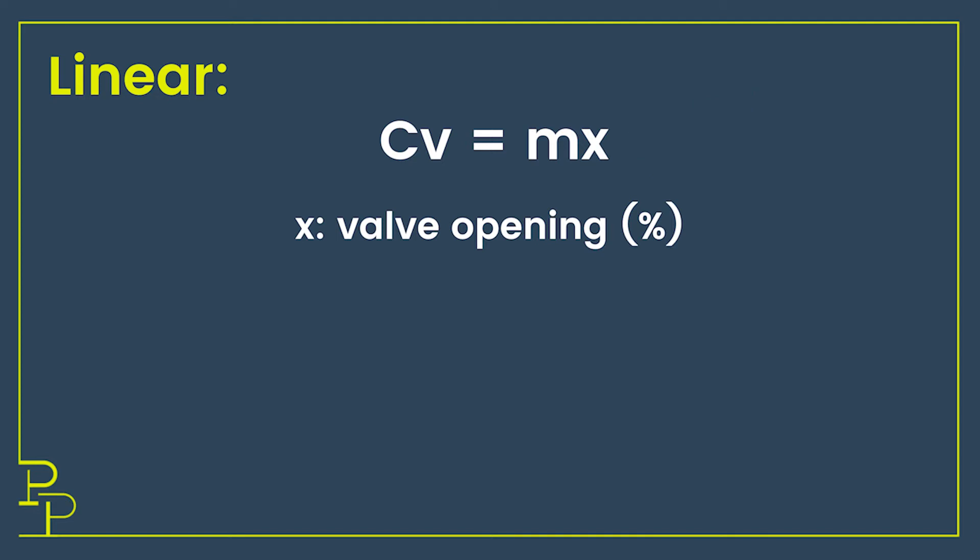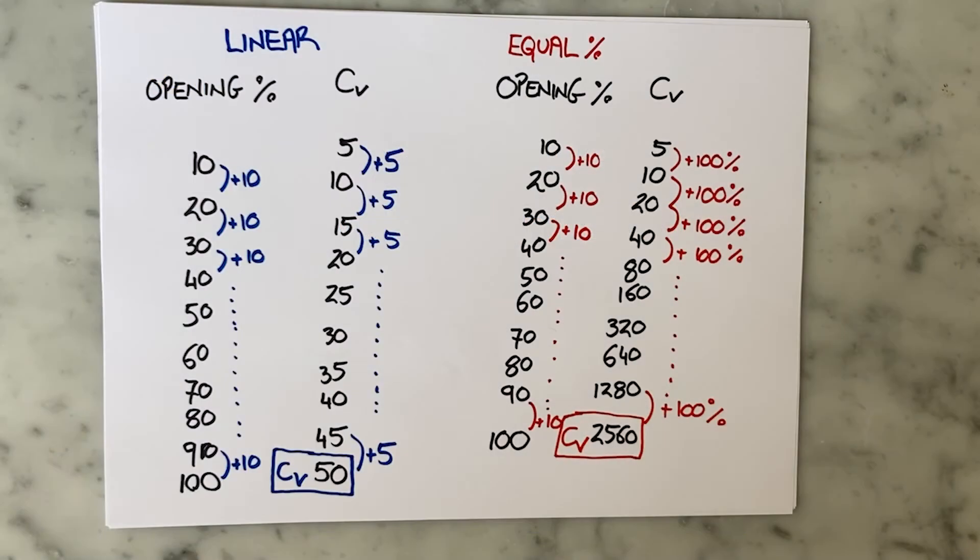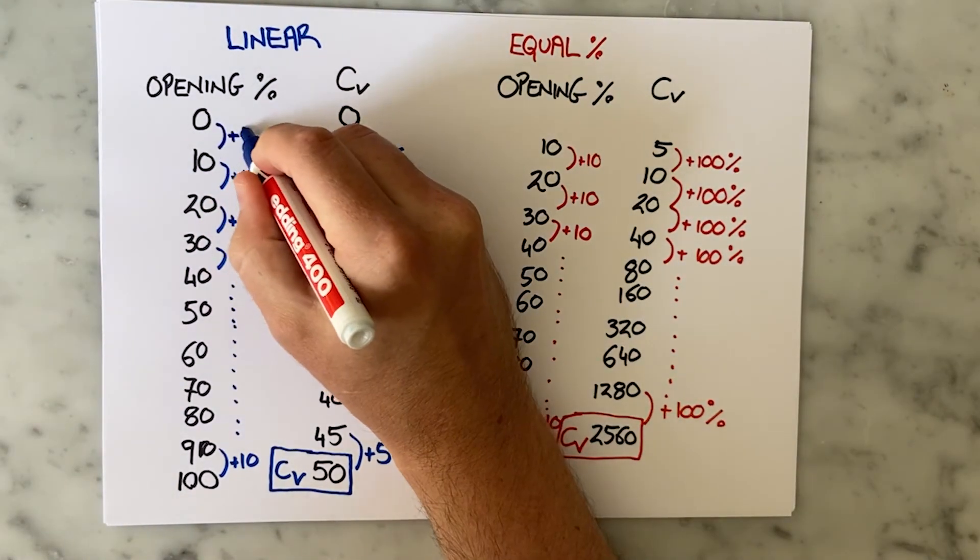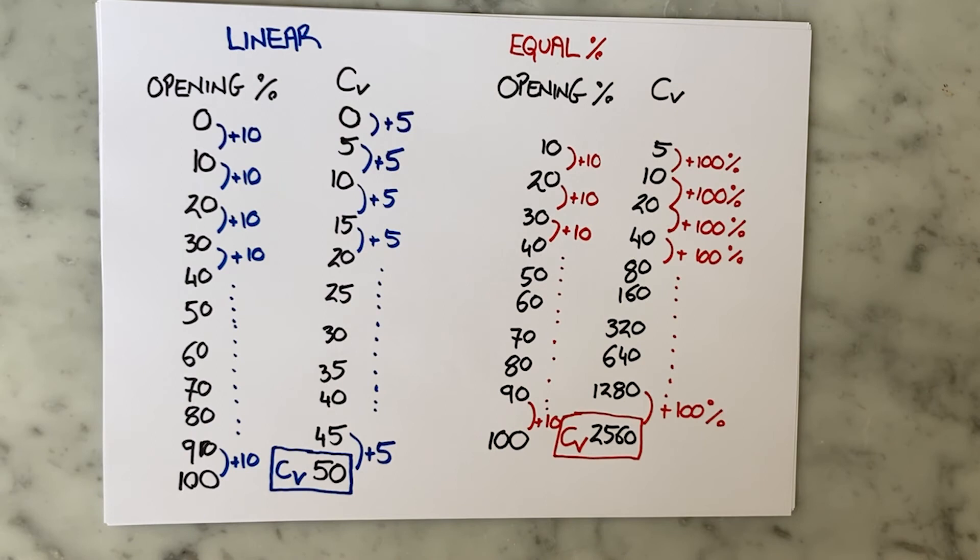So I only need one combination of CV and valve opening to fully define the behavior of a linear valve. For my linear valve I see that the gradient here is 0.5. This is a really easy pattern to follow. So it's easy to see what happens between 0% opening and 10% opening.